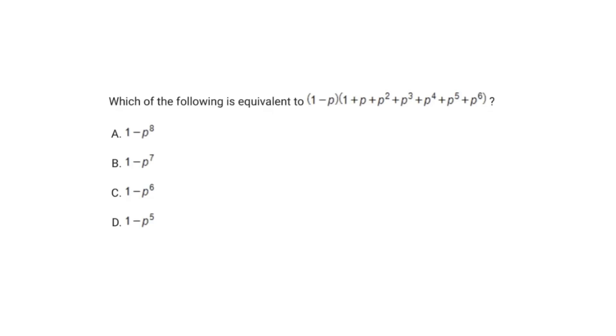All right, so this problem says, which of the following is equivalent to (1 - p)(1 + p + p² + ...)? I'm not going to read all that, but you get the point.